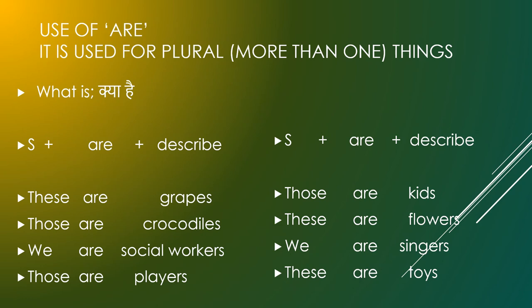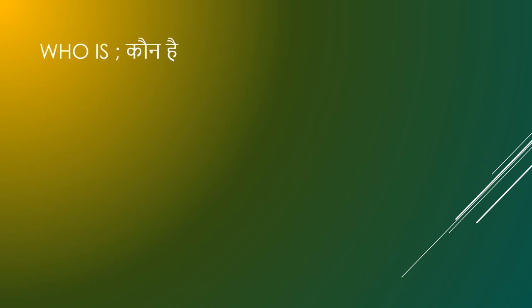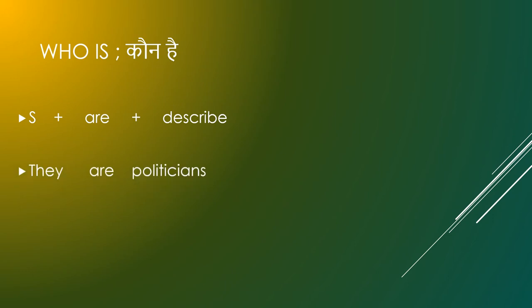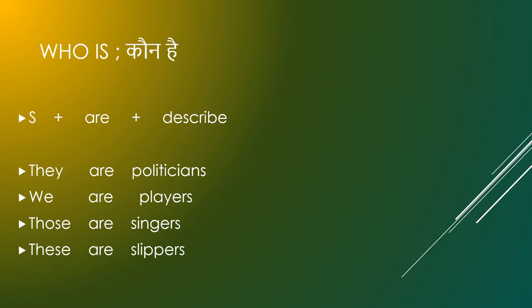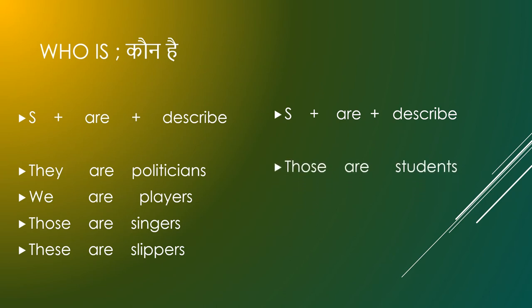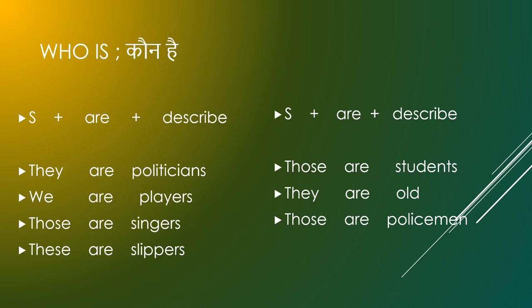For 'who is it' — कौन हैं? Subject + are + describe. They are politicians. We are players. Those are singers. These are sleepers. Those are students. They are old. Those are policemen. They are workers — वे कामगार हैं. यह कौन है के लिए अनेक वचन में.